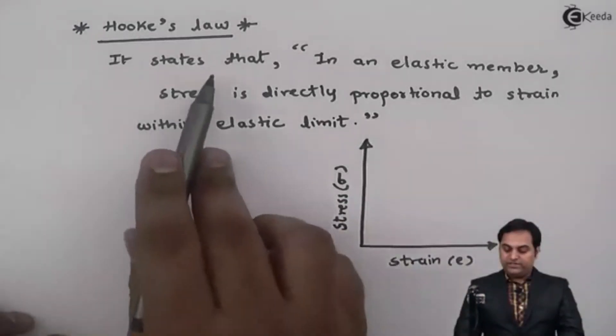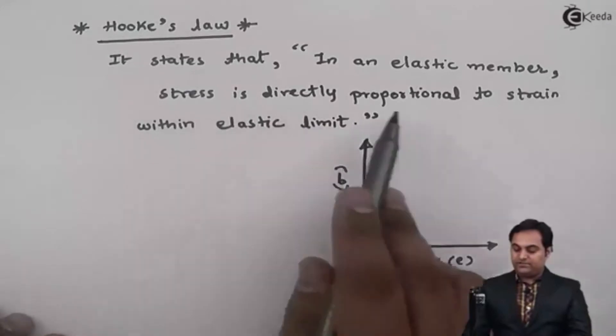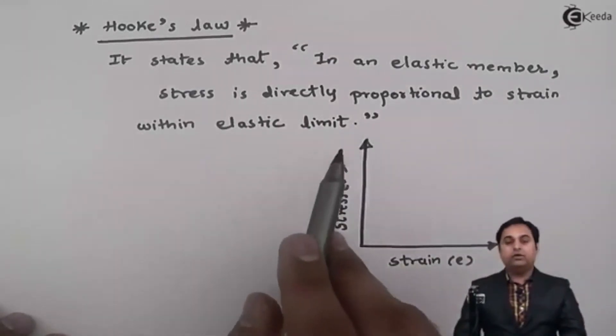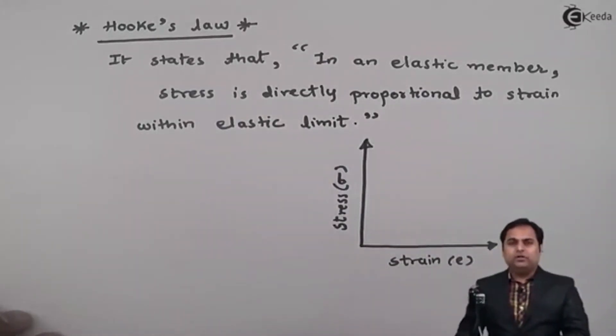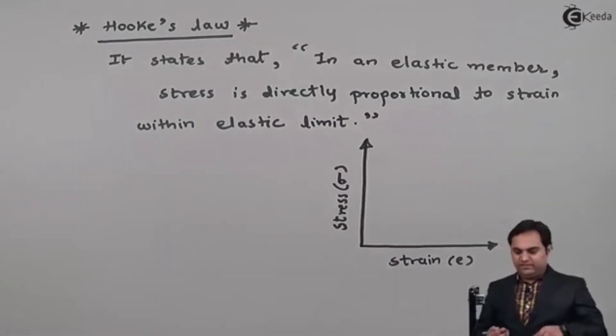It states that in an elastic member stress is directly proportional to strain within elastic limit. Now what is the meaning of elastic limit is that if we have a member or a rod.